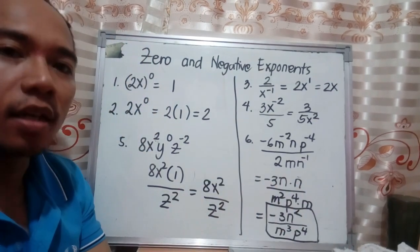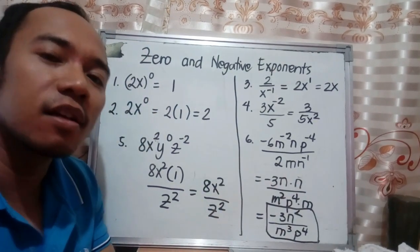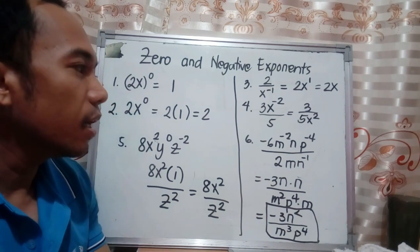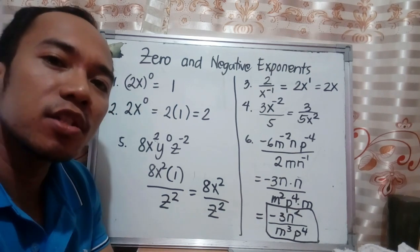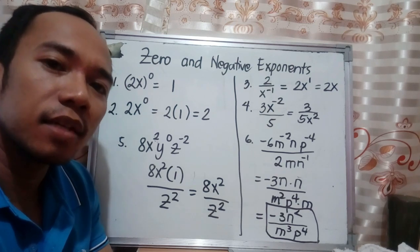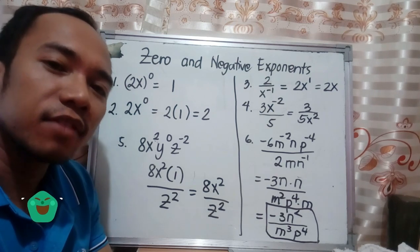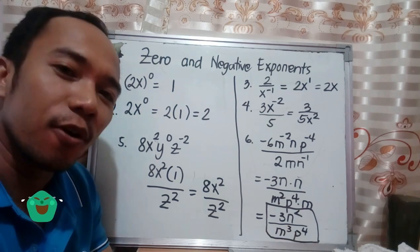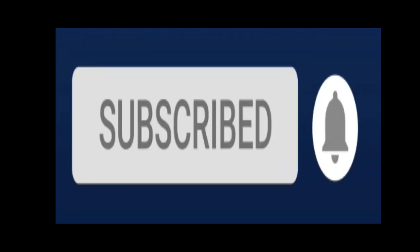If you cannot understand it clearly, just repeat the video. If you have questions, you can ask me directly at TPAES Integrated School. That is your final answer for simplifying expressions with zero and negative exponents.